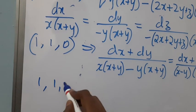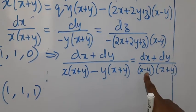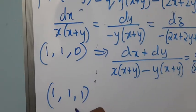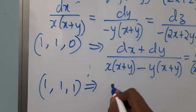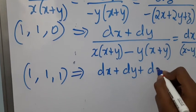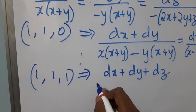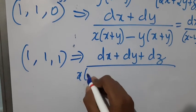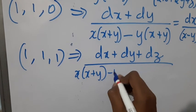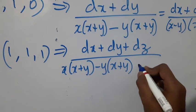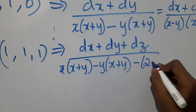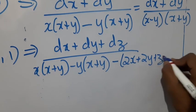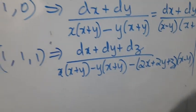Since there is (X minus Y) common in both terms, we can use multipliers 1, 1, 1. This results in dx plus dy plus dz divided by X(X+Y) minus Y(X+Y) minus (2X plus 2Y plus Z)(X minus Y).